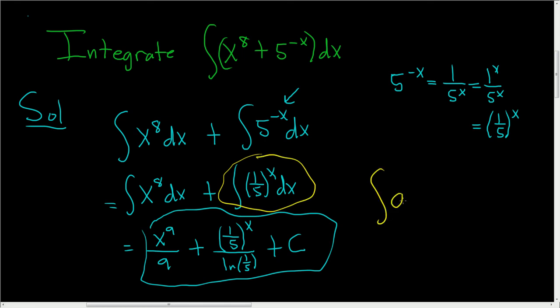Basically, if you have a to the x with respect to x, when you integrate this, you get a to the x over the natural log of a plus a constant. That's the formula that we used for this piece.